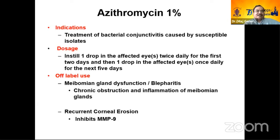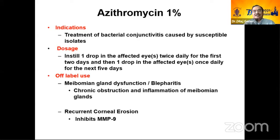Azithromycin becomes off-label if you are using it for meibomian gland dysfunction, blepharitis, or chronic obstructions, because these indications are not specified in FDA approval for ophthalmic purposes. Similarly, an IOL implant also becomes an off-label choice — for example, as an optional surgical treatment for keratoconus.